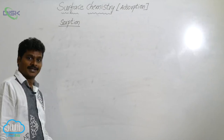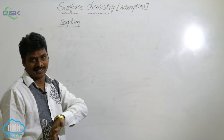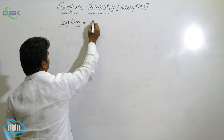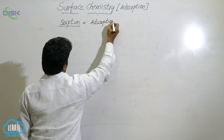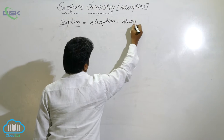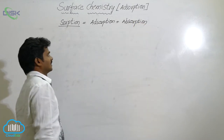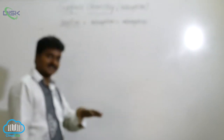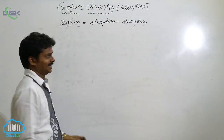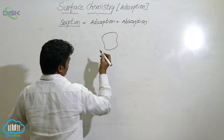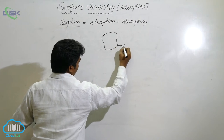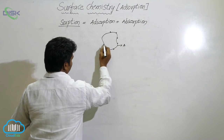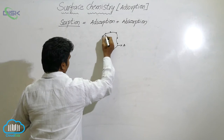What is sorption? If adsorption and absorption both take place simultaneously, the process is called sorption. Sorption means adsorption plus absorption — concentration of particles on the surface and in the bulk both take place. See the picture: this is substance A, and the particles of B are concentrating over the surface of A and also in the bulk of A.